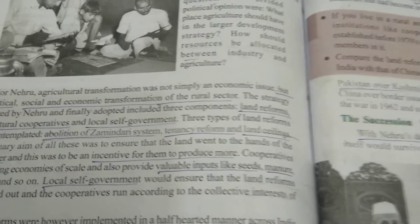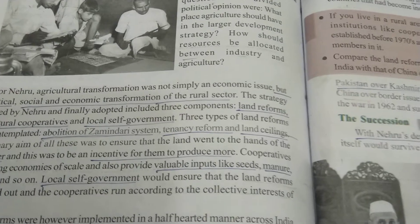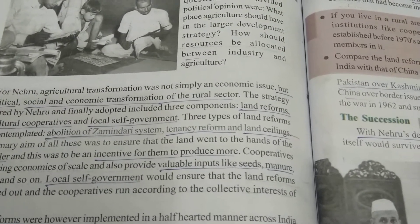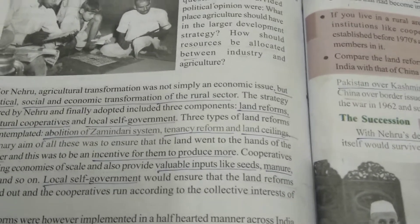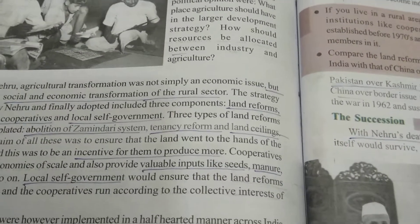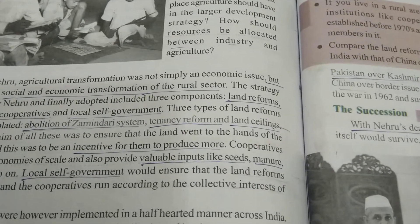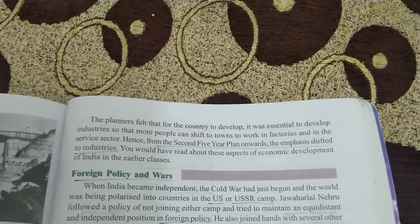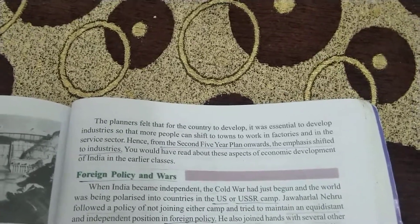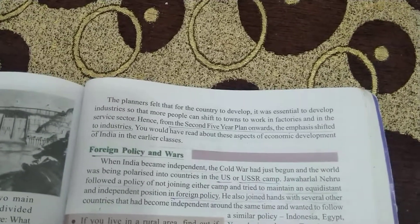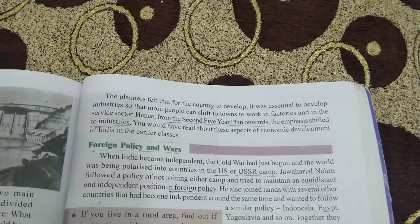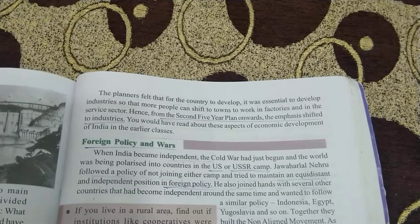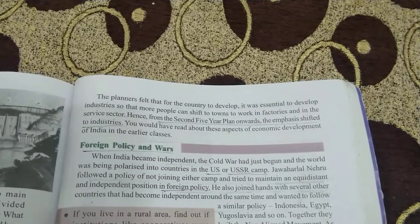In the first five year plan, they tried to improve agriculture by building large dams, irrigation facilities, and electricity production. Dams benefited both the agriculture and industrial sectors. The planners felt that for the country to develop, it was essential to develop industries so that more people could shift to towns to work in factories and in the service sector. That is why in the second five year plan, they focused on industries.